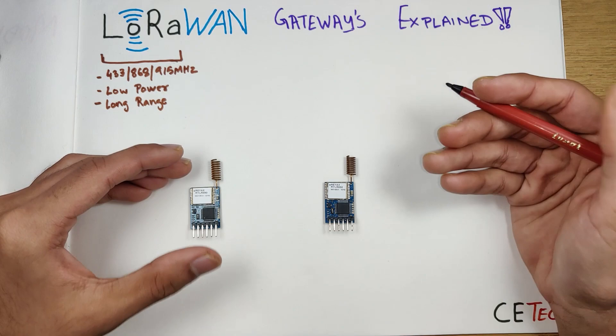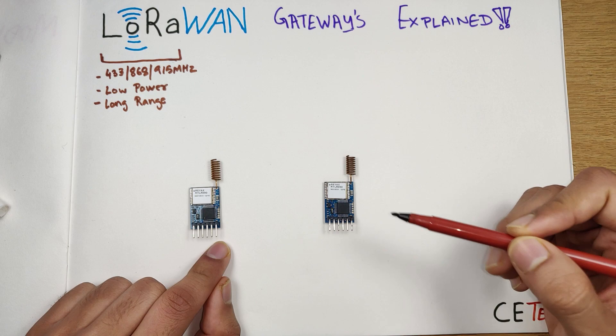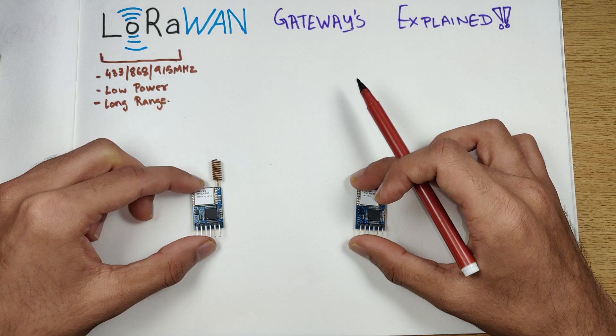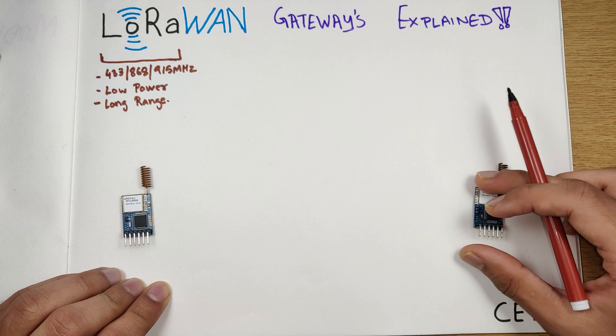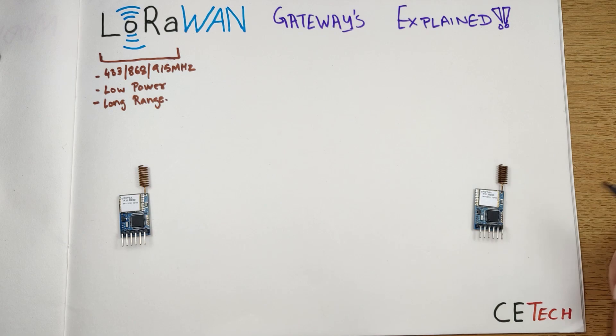Just like Wi-Fi, wherein you transmit information over radio frequency of 2.4 GHz or 5 GHz, LoRa is also used to transmit data or set up communication between two LoRa modules. In this case we have two REYAX LoRa modules of 868 MHz. You can transmit small information between these two modules and achieve a very large range, wherein these two modules can be separated by hundreds of kilometers and the communication will still be going on.